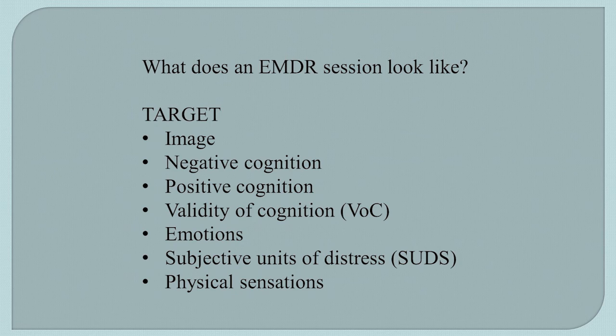What does an EMDR session look like? When we identify a memory, we set up what we call a target. That consists of an image. We ask our client, when you think of this incident, what's the image that represents the worst part of it? When you bring up that image, what's the negative belief about yourself? When you bring up that incident, what would you like to believe about yourself instead? That's the positive cognition.